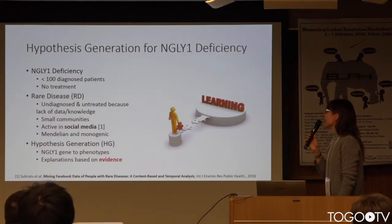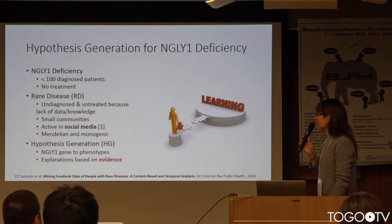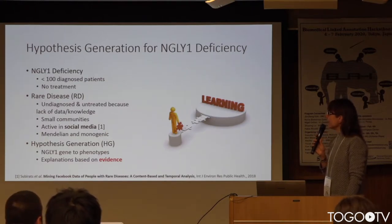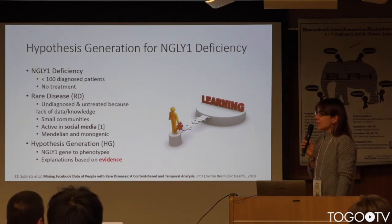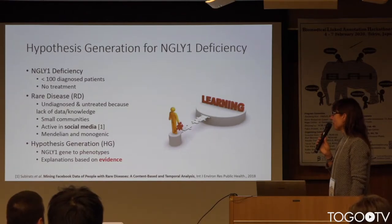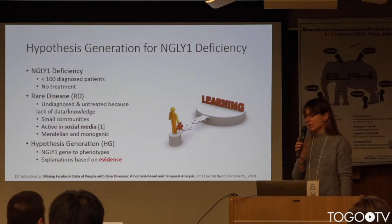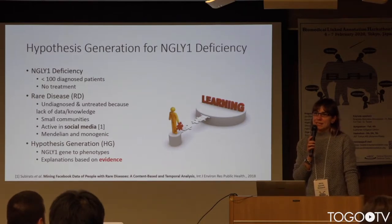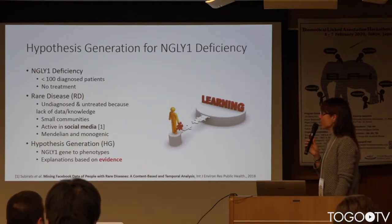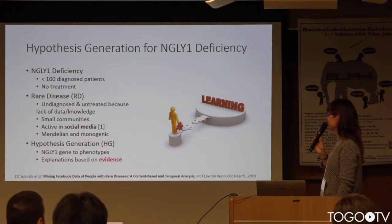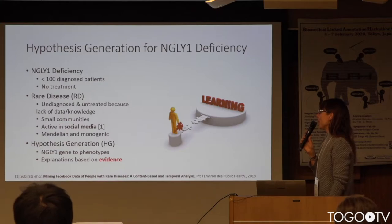NG1 deficiency is a genetic metabolic disorder that is diagnosed in fewer than 100 patients currently, and there is no treatment right now. It's a rare disease — rare diseases have several definitions. In the U.S., a rare disease is one that affects fewer than one person per 200,000 persons. As you can see, our use case is a neurological rare disease.